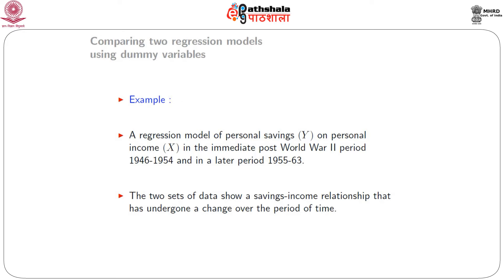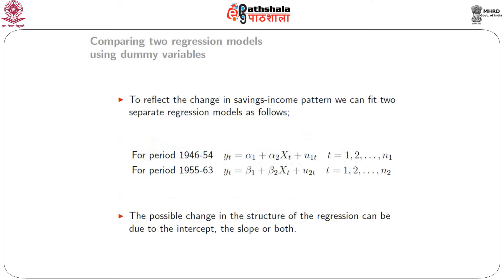If we look at the two sets of data, we will see that the savings-income regression relationship has changed over the two periods of time. We will fit two regression models to the two sets of data and compare to see if there is really a change in the regression relationship. The first comparison will be performed using the Chow test. To reflect the change in our model, let us fit two separate lines for the two periods.